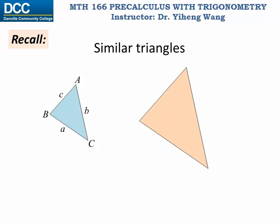the three angles are known as D, E, and F again in capital letters, and the three corresponding opposite sides are known as d, e, f in small letters. Now if angle A equals angle D and angle B equals angle E — in other words if two angles in the first triangle equal two angles in the second triangle — then since the three angles of a triangle add up to 180 degrees, angle C must also equal angle F.